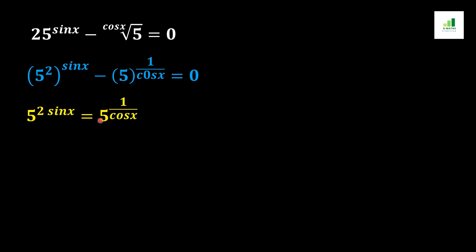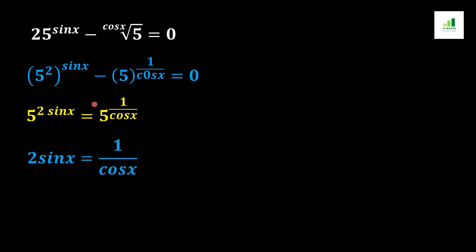Now we apply the basic rule of algebra: if two values are equal in magnitude, then their powers are also equal. Applying the same rule here, we get 2 sine x equals 1 over cos x.